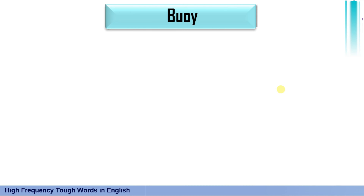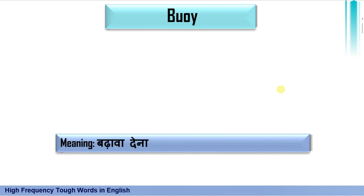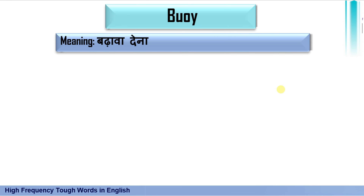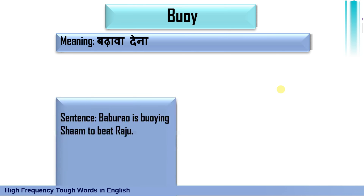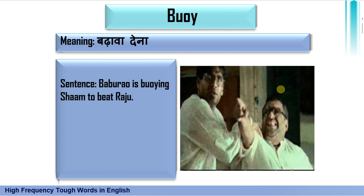The first word for this video is 'boy' which means badhava dena. The sentence I have formed uses a very funny scene from the iconic movie Hera Peri: Babu Rao is bowing sham to beat Raju.